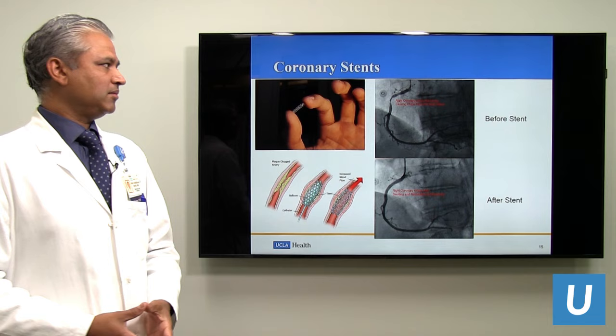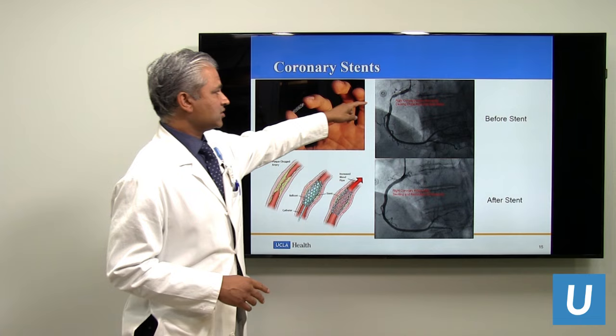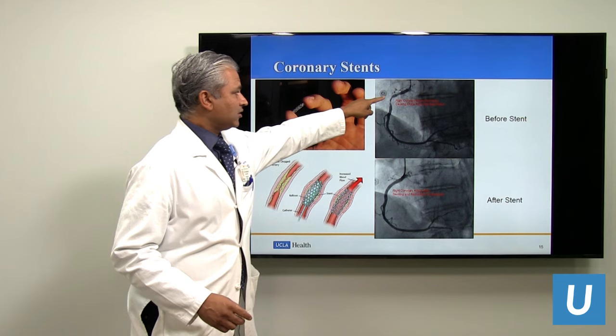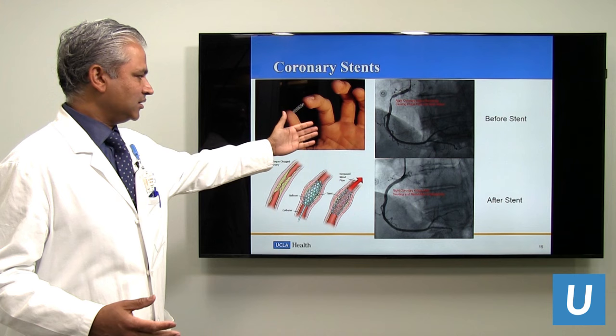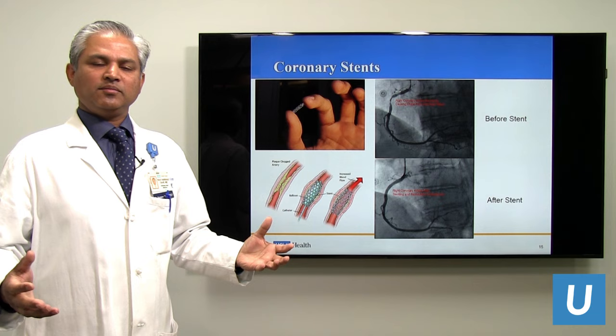This is a picture of one of the procedures done at UCLA where a patient had a blockage that led to a lot of chest pain and a heart attack. After this was identified, a stent was placed. As you can see in the following picture, the blockage is completely resolved and blood flow is re-established.